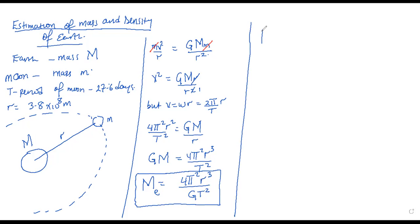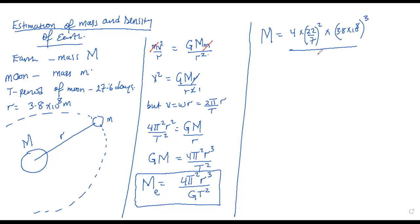So we substitute to find capital M. We shall have 4 times 22/7, but the whole of this is squared, times the radius which is 3.8 times 10 to the power 8, all cubed, divided by the period — 27.6 days — which is 27.6 times 24 hours per day times 3600 seconds per hour, and all this is squared. When you compute, what is the value of mass of the earth? So we know how heavy our earth is.